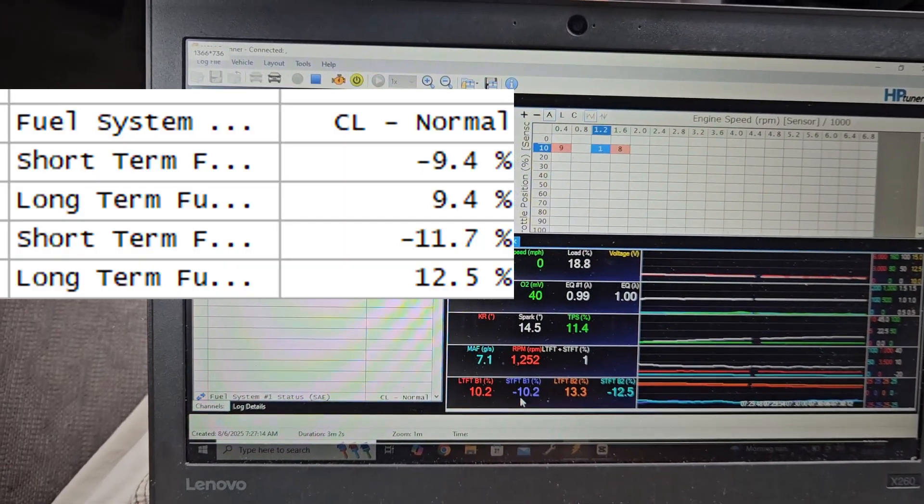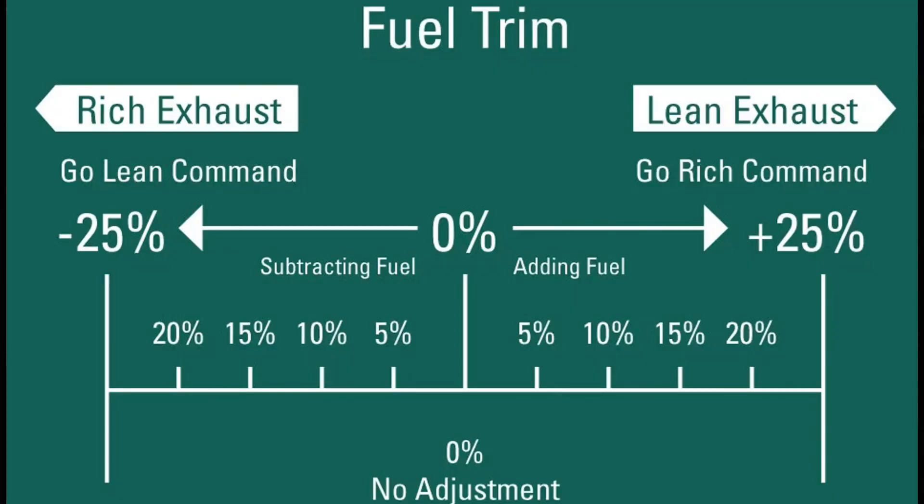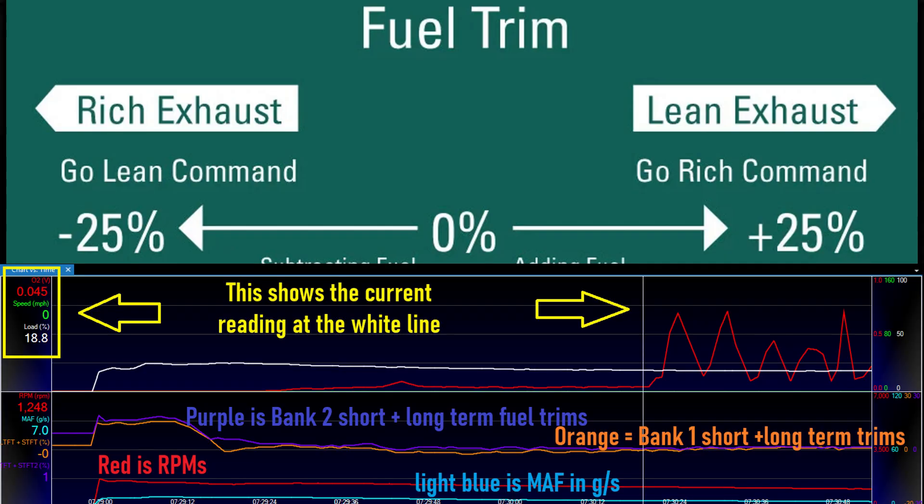So I have positive 10 and negative 10 for bank one, positive 12, negative 11, 12 for bank two, which is perfectly normal. So those trims look to be okay. So right now we do not appear to have a problem. Let's give her a test drive.